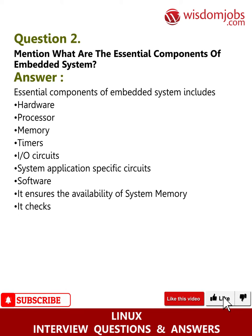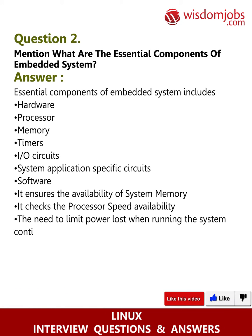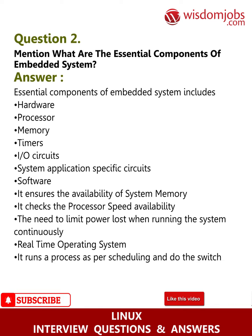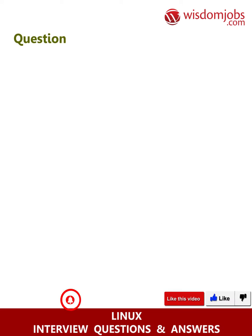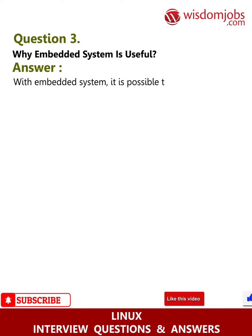It checks the processor speed availability and the need to limit power loss when running the system continuously. Real-time operating system: it runs a process as per scheduling and does the switching from one process to another. Question 3: Why is an embedded system useful? Answer: With an embedded system, it is possible to replace dozens or even more hardware logic gates, input buffers, timing circuits, output drivers, etc.